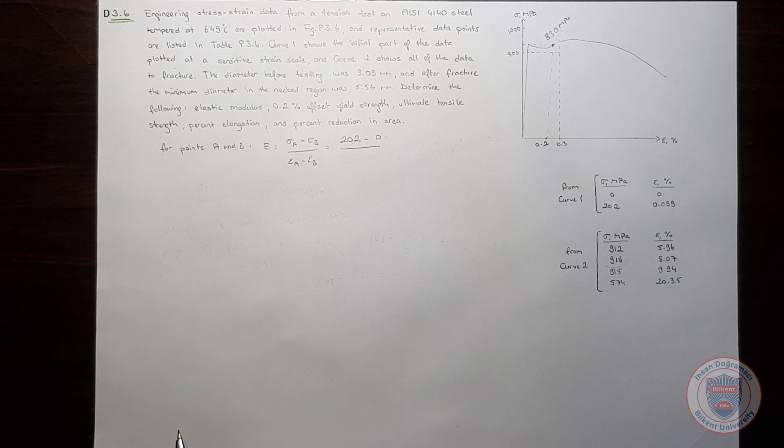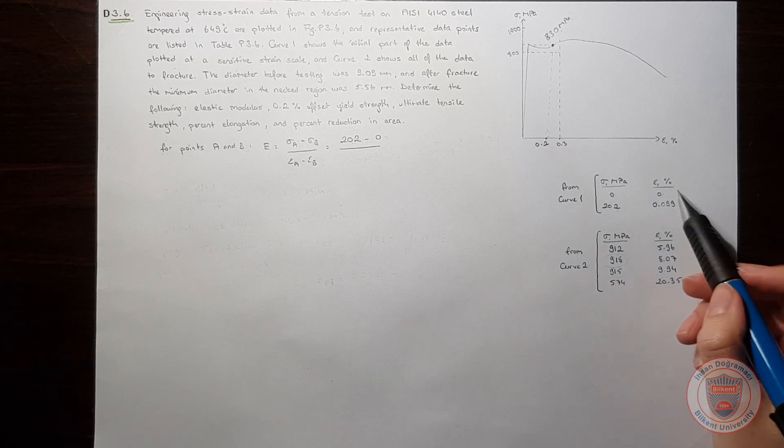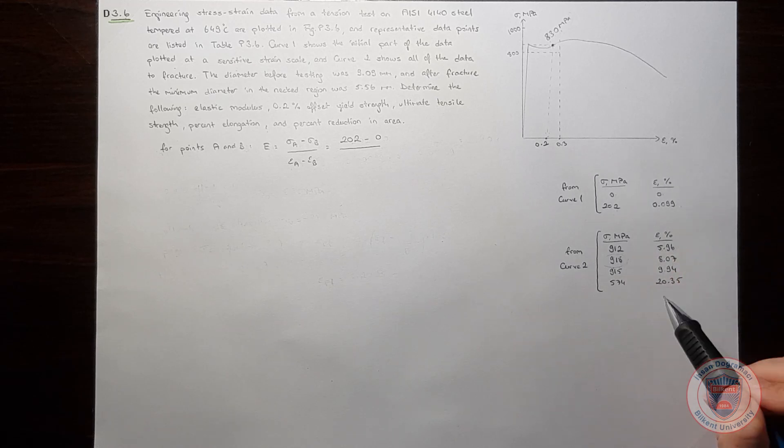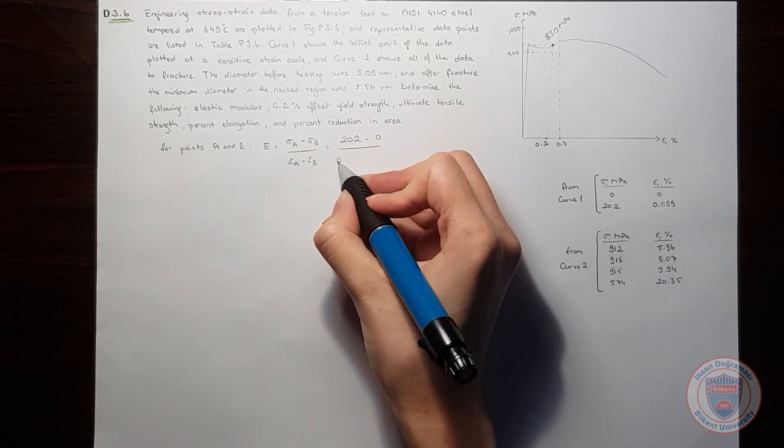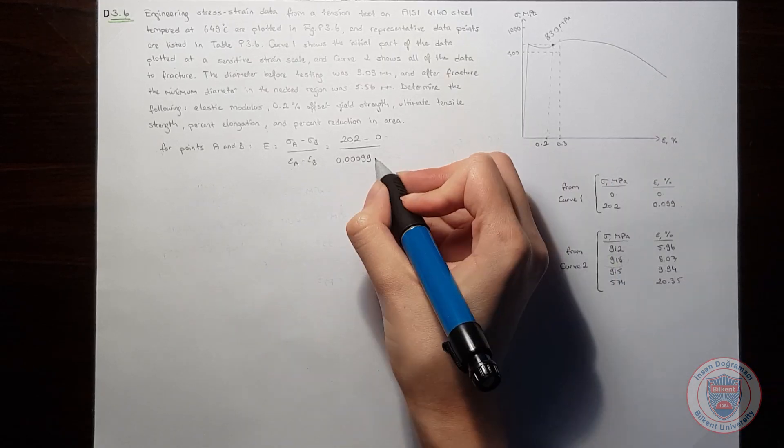And for elongation at A, I will be using 0.099%, but since it is percent, I will divide it by 100, which will give me this, and again minus 0.